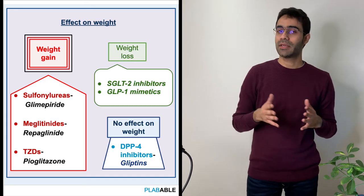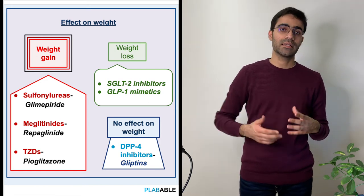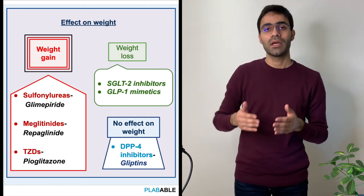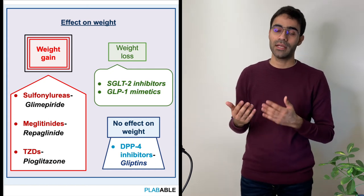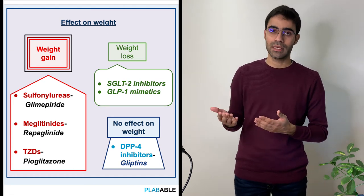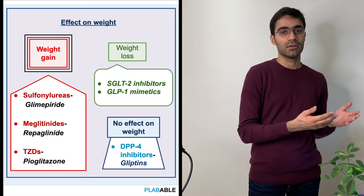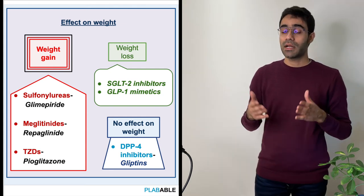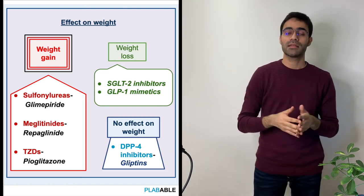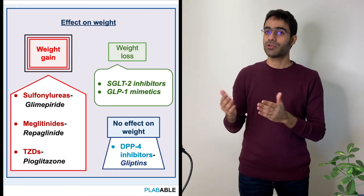While prescribing oral hypoglycemic agents, we need to consider the patient's weight, because along with their anti-diabetic function, these drugs also have an effect on weight. Drugs that cause weight gain include sulfonylureas and pioglitazone. Drugs that cause weight loss are SGLT-2 inhibitors and GLP-1 agonists. DPP-4 inhibitors have no effect on weight. So if the patient is morbidly obese or has a BMI of more than 30, we need to make the choice accordingly.